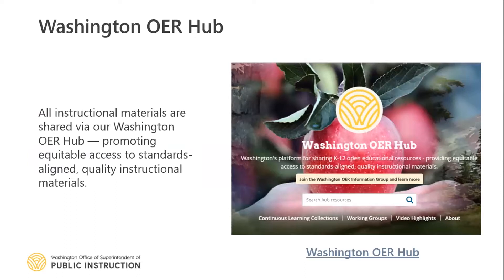All of the grantees you're going to be hearing from today, and all of the resources they are creating, are located on our Washington OER Hub — our online platform for sharing standards-aligned content with educators across the state. If you are not familiar with the Washington OER Hub, I'm going to put a link into the chat window right now. All of the resources we talk about today will be accessed by clicking that link and searching for the resources there. Each individual grantee will tell you specifically where their resources are located. All of them can be found by clicking on the search hub resources bar and typing in the name of the resource.